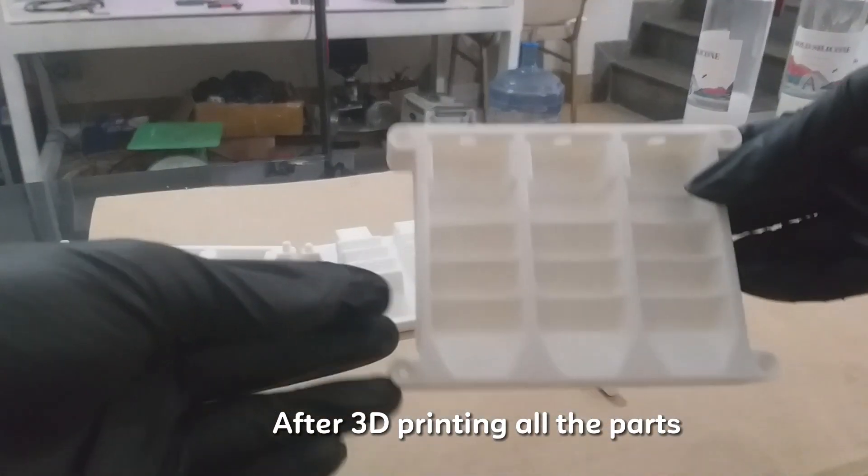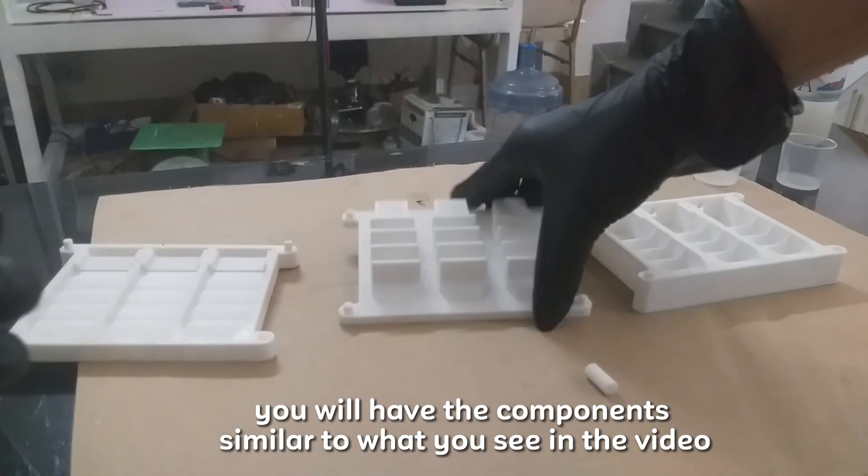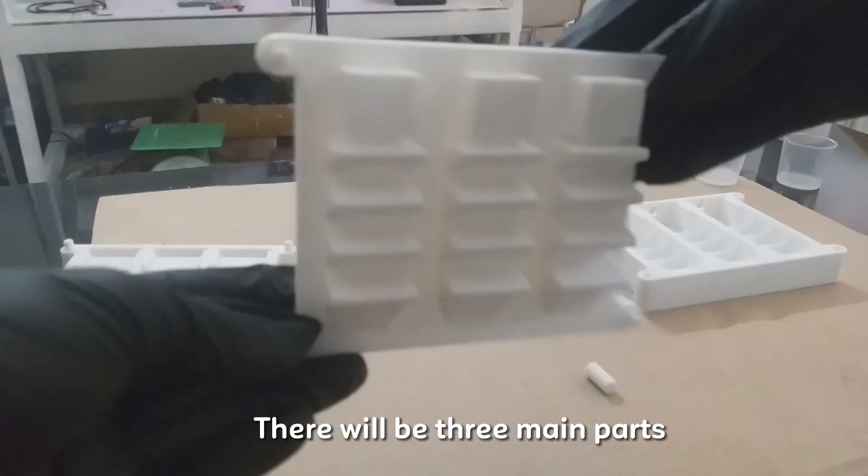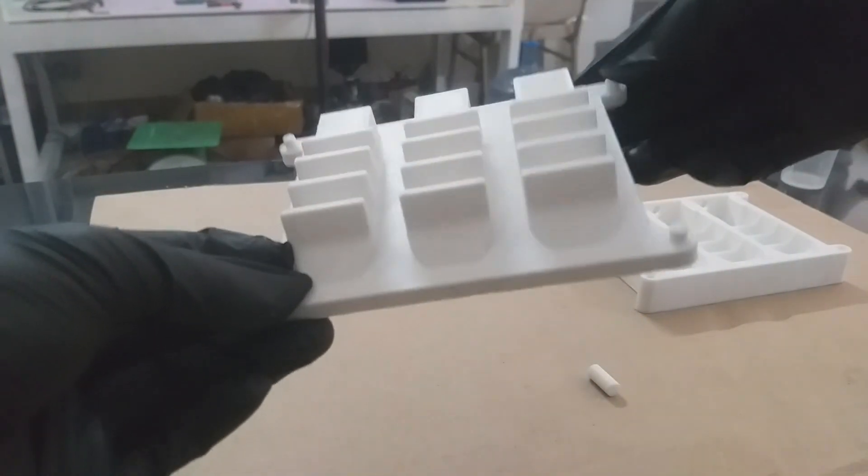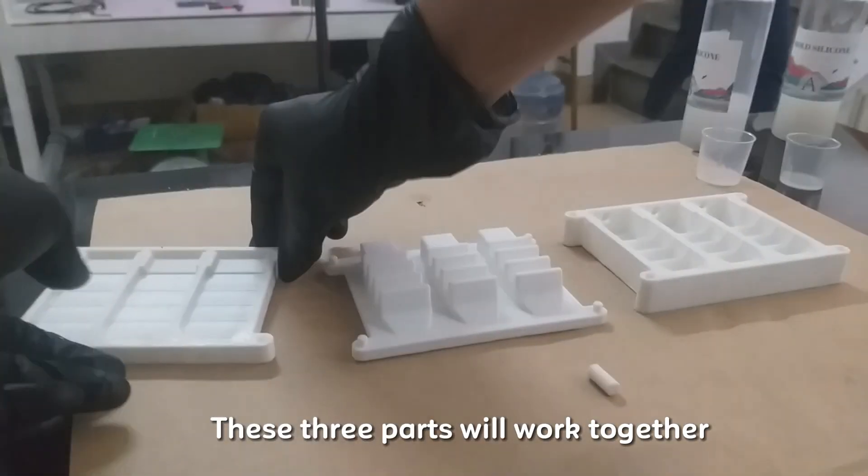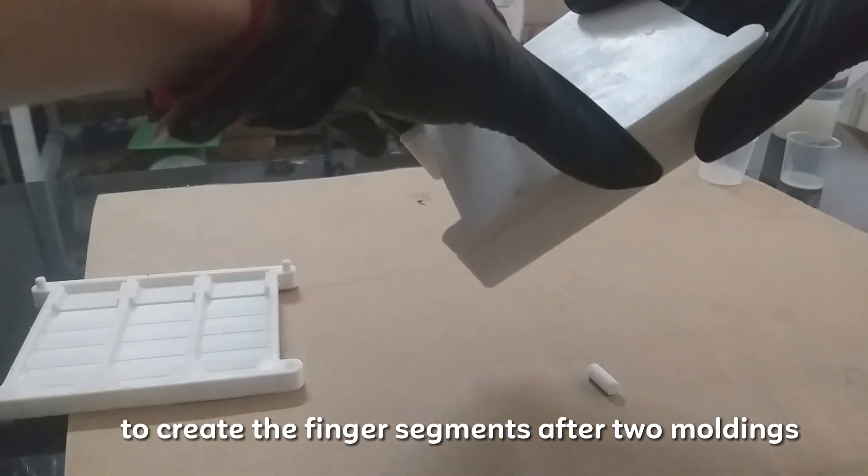After 3D printing all the parts, you will have the components similar to what you see in the video. There will be three main parts. These three parts will work together to create the finger segments after two moldings.